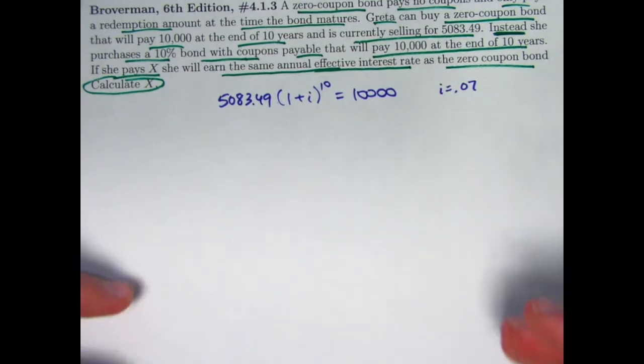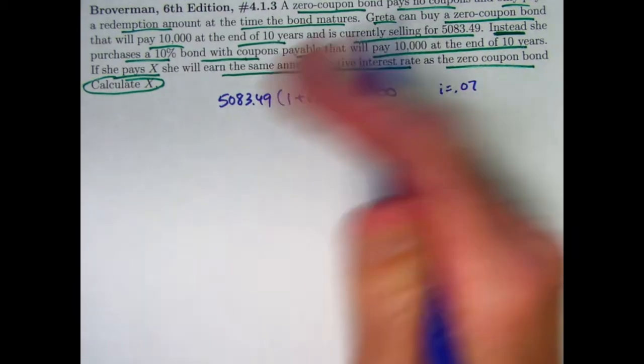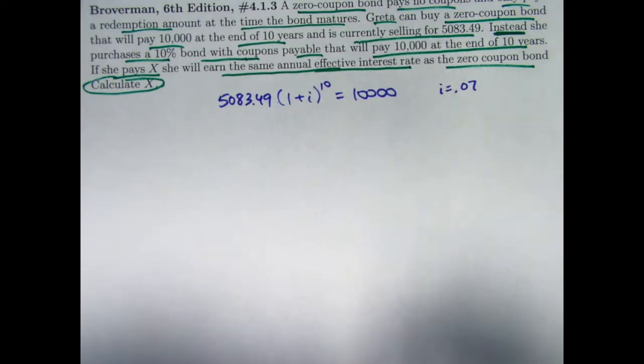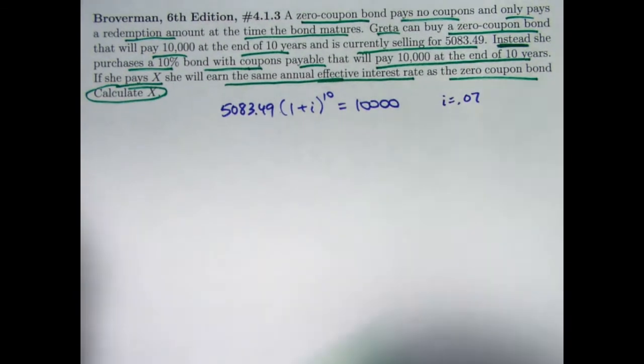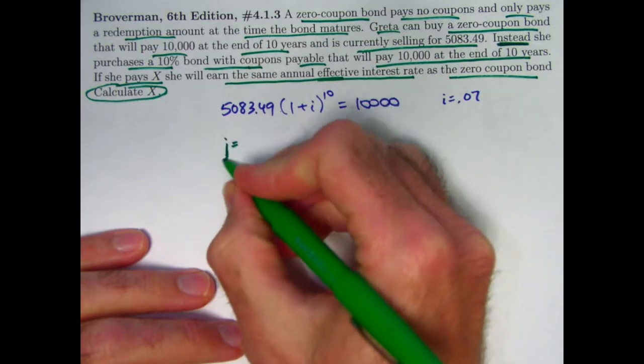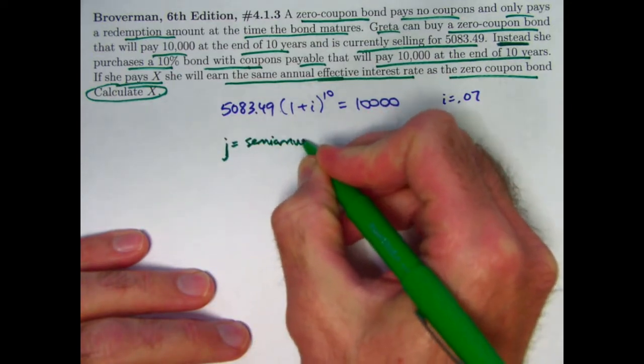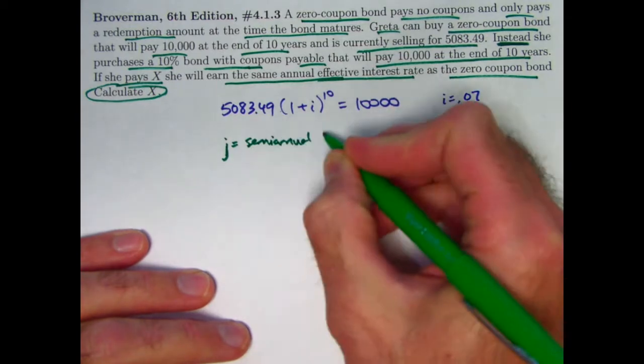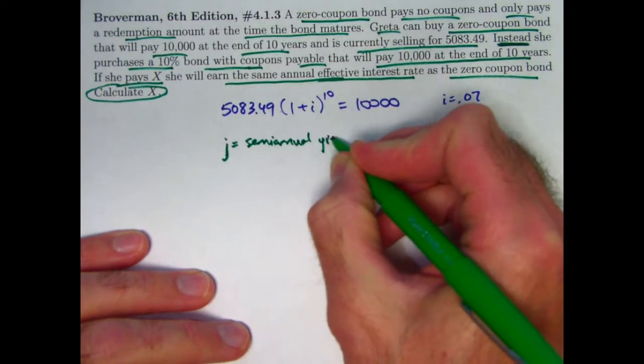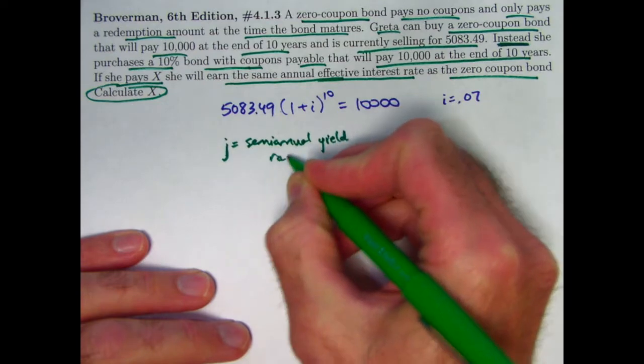Alright, now remember again, just like I said a minute ago, unless stated otherwise, you assume that the coupons are semi-annual, and your yield rate per period would be per six months in this case. J is going to be the semi-annual, effective semi-annual yield rate for the bond with coupons.